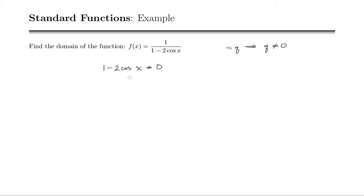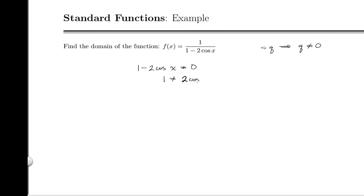Now, if we add the 2 cosine of x over, 2 cosine of x, and then divide by 2, we get that cosine of x cannot equal 1 half.